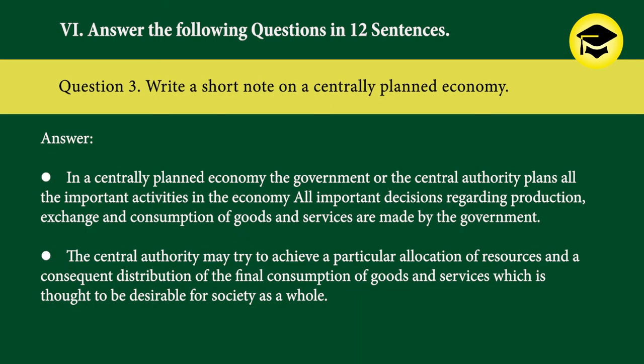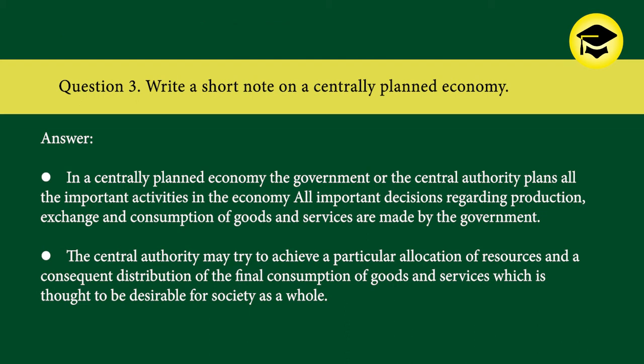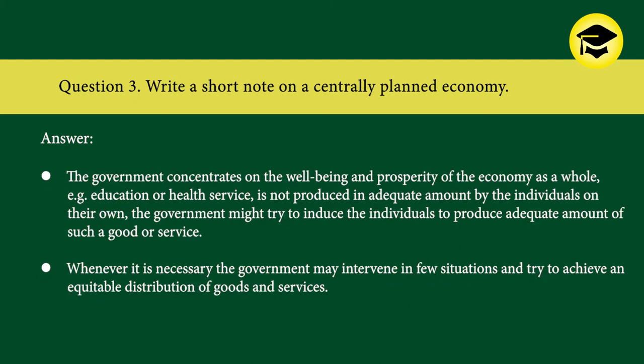Question 3: Write a short note on centrally planned economy. Answer: In a centrally planned economy, the government or the central authority plans all the important activities in the economy. All important decisions regarding production, exchange, and consumption of goods and services are made by the government. The central authority may try to achieve a particular allocation of resources and a consequent distribution of final consumption of goods and services which is thought to be desirable for society as a whole. The government concentrates on the well-being and prosperity of the economy; for example, education or health services not produced adequately by individuals may be induced by the government. Whenever necessary, the government may intervene to achieve an equitable distribution of goods and services.